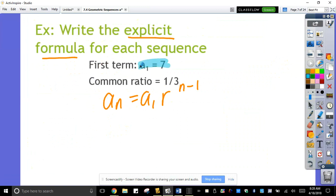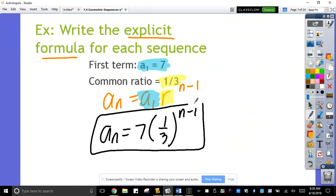First, the first term is a sub 1, 7. Common ratio is 1/3. The a sub 1, which is 7, will go over here. And this 1/3, which is the common ratio, will go right here. And the rest, just leave it like that. And that's how you write your explicit formula. a sub n equals 7 times (1/3) to the n minus 1, just leave it like that. And that's the answer.